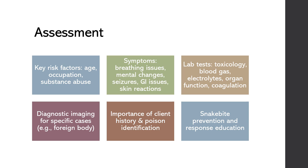Let's review the risk factors for poisoning in the assessment context. Age is a significant factor — young children are at higher risk due to curiosity and lack of understanding, but the elderly may also be at risk due to medication errors or confusion. Occupational exposure to hazardous chemicals in industrial or agricultural settings also increases risk. A history of substance abuse, mental health issues, or previous suicide attempts can further elevate risk, as these individuals may be more likely to intentionally ingest toxic substances.